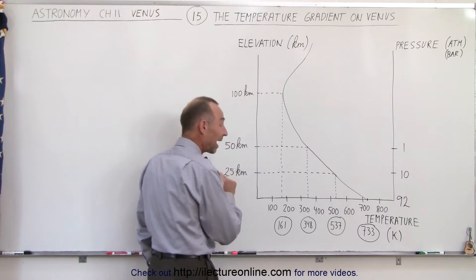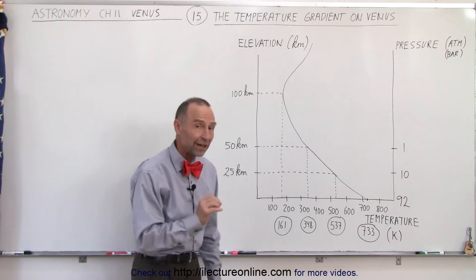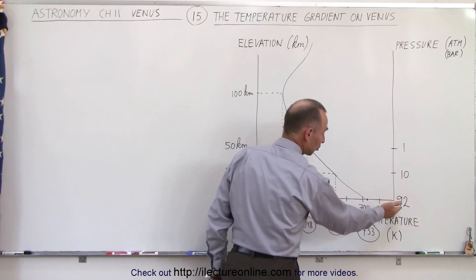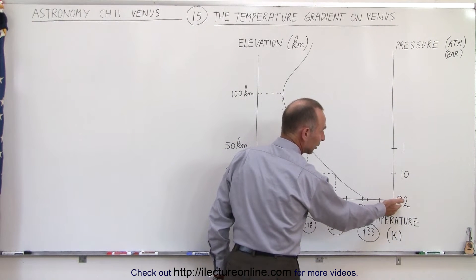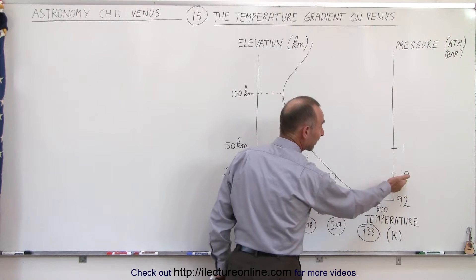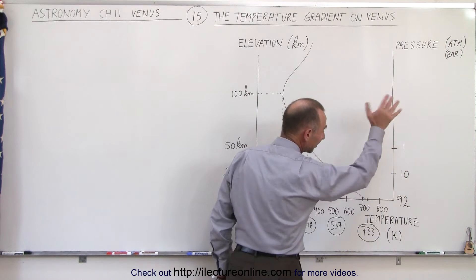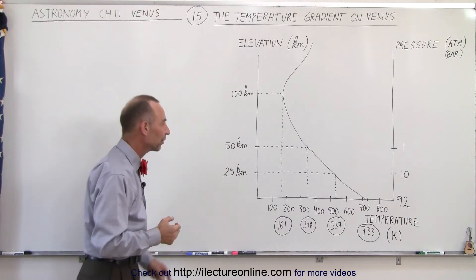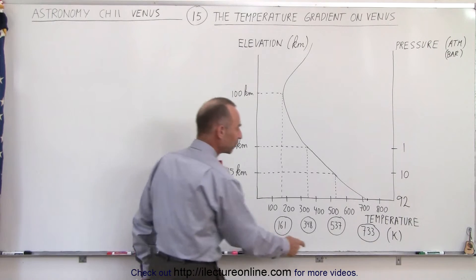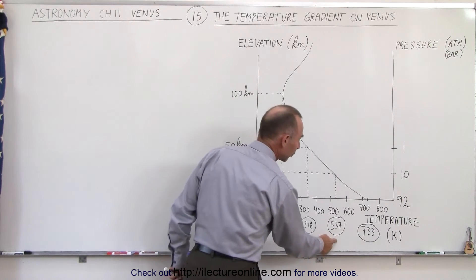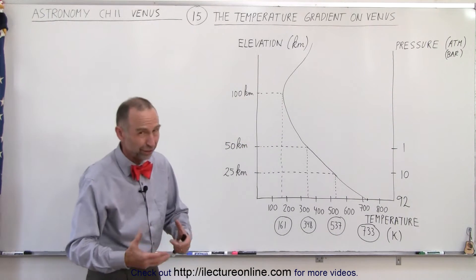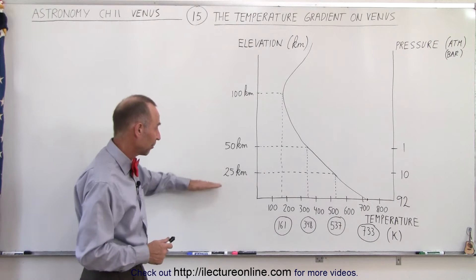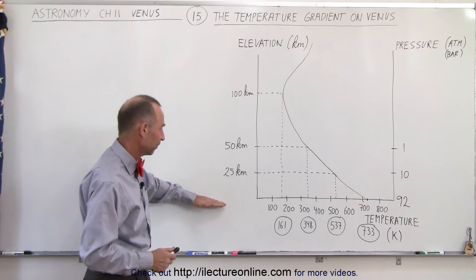By the time you reach a height of 25 kilometers, the atmospheric pressure has dropped from 92 bar to about 10 bar, which is roughly the same as 10 Earth's atmospheres. The temperature has now dropped to 537 Kelvin, which is still very, very hot. This is about 15 miles up into the atmosphere.